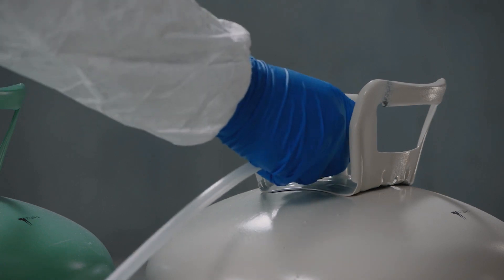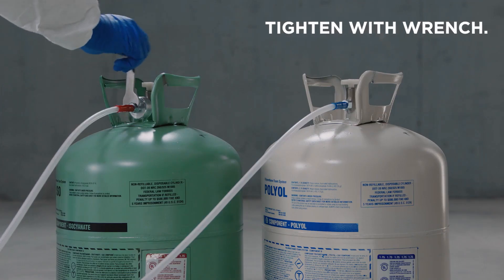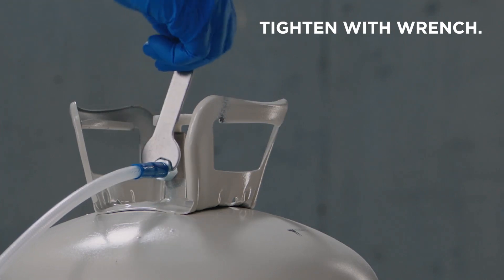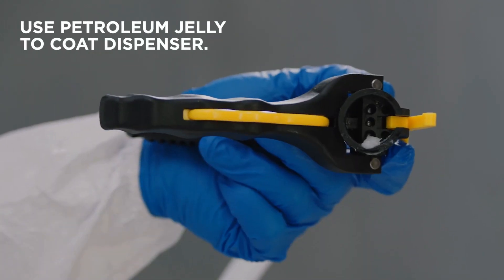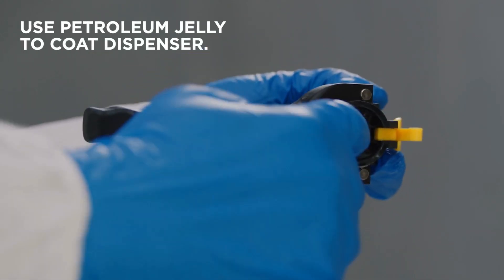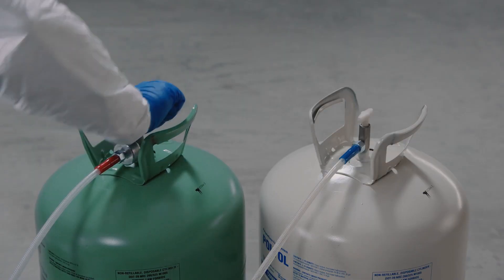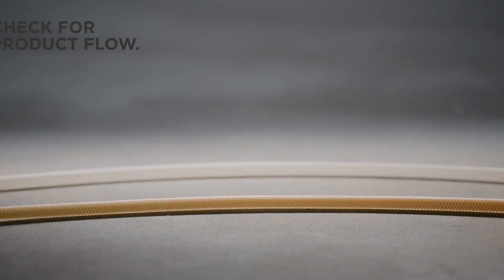Tighten all the connections with the included wrench. Now coat the inside face of the InstaFlo dispenser with petroleum jelly. Fully open both tank valves, then check for product flowing through lines.